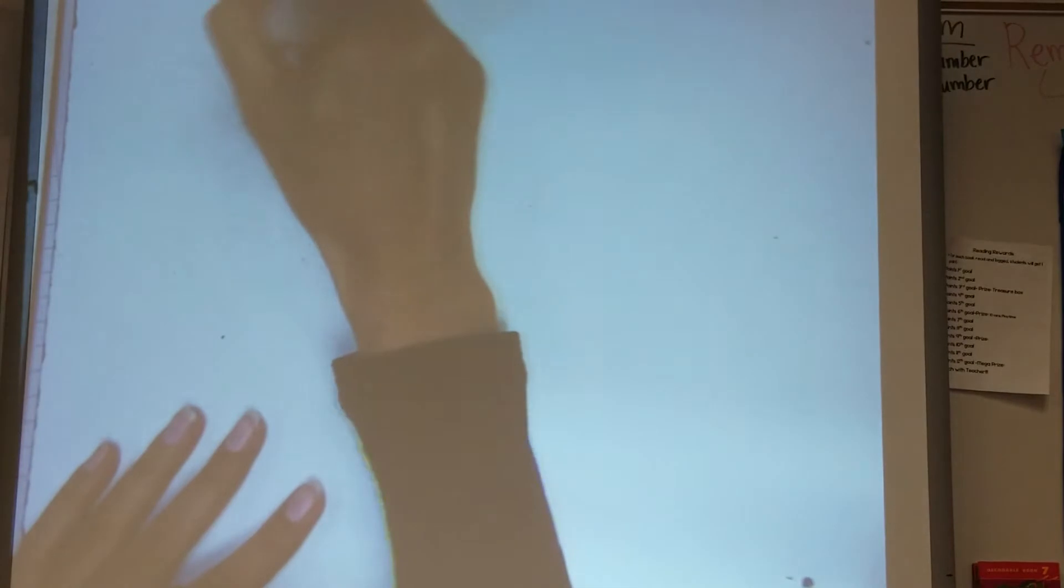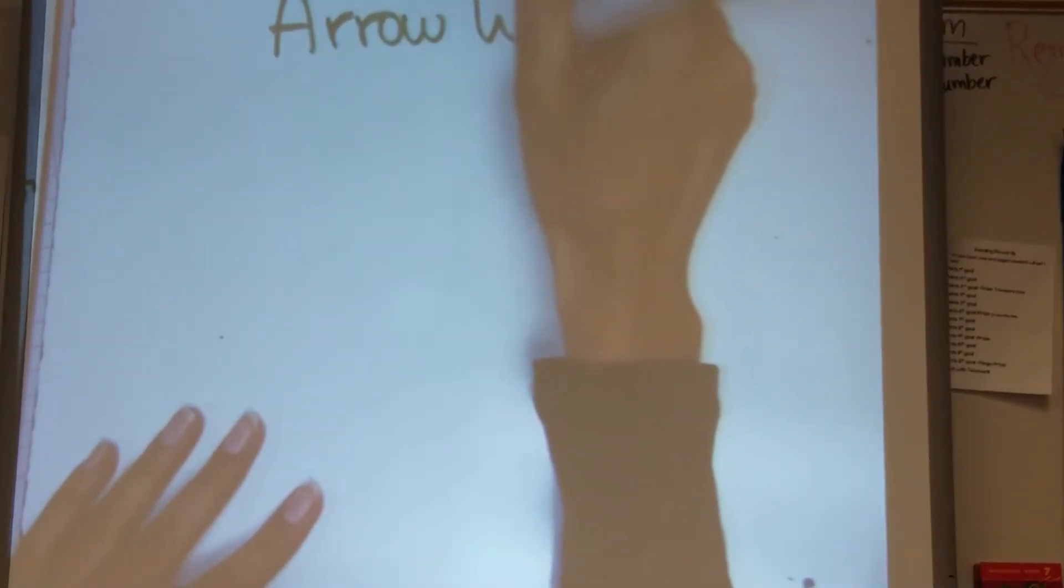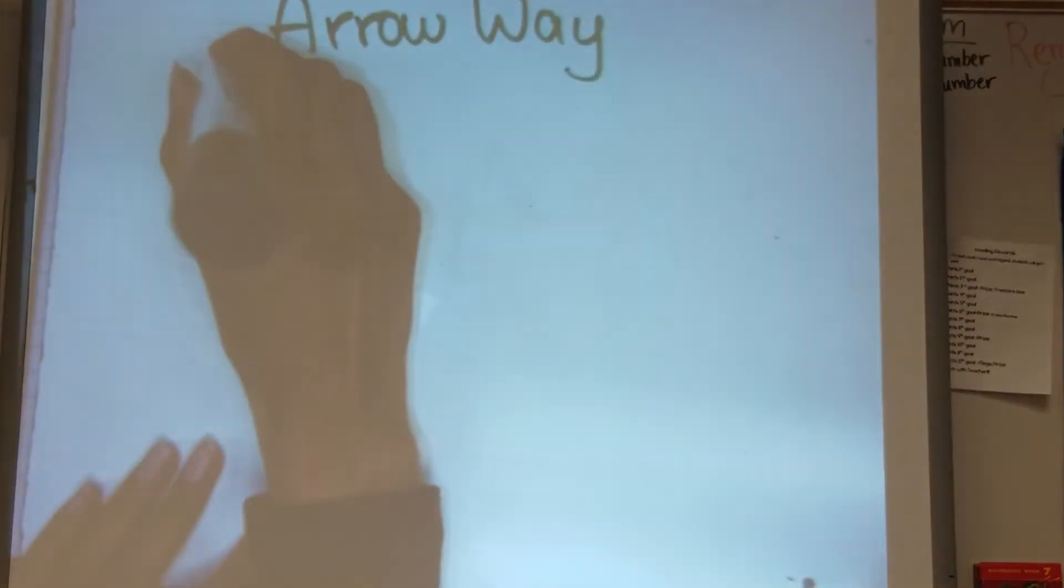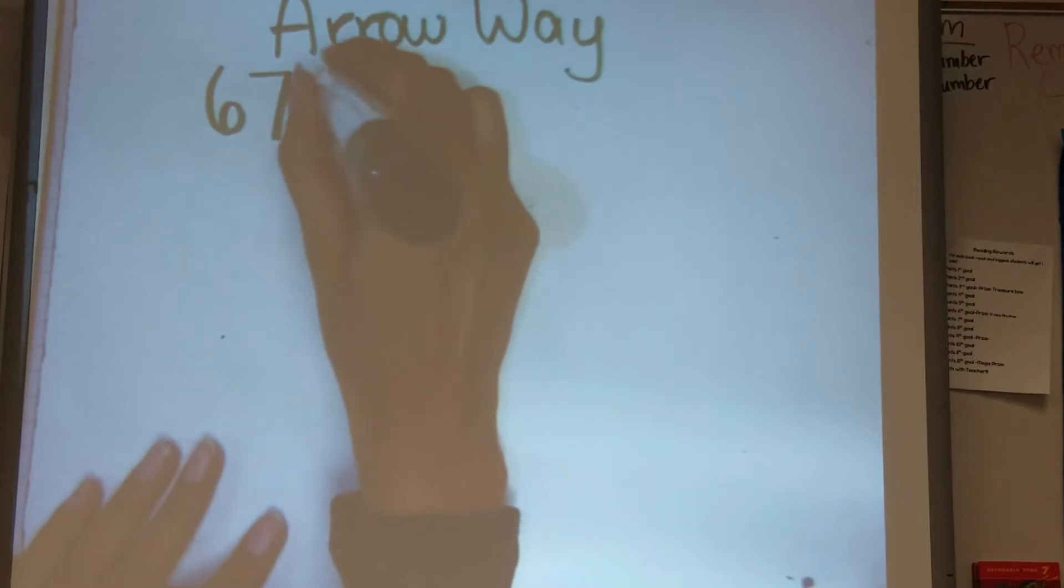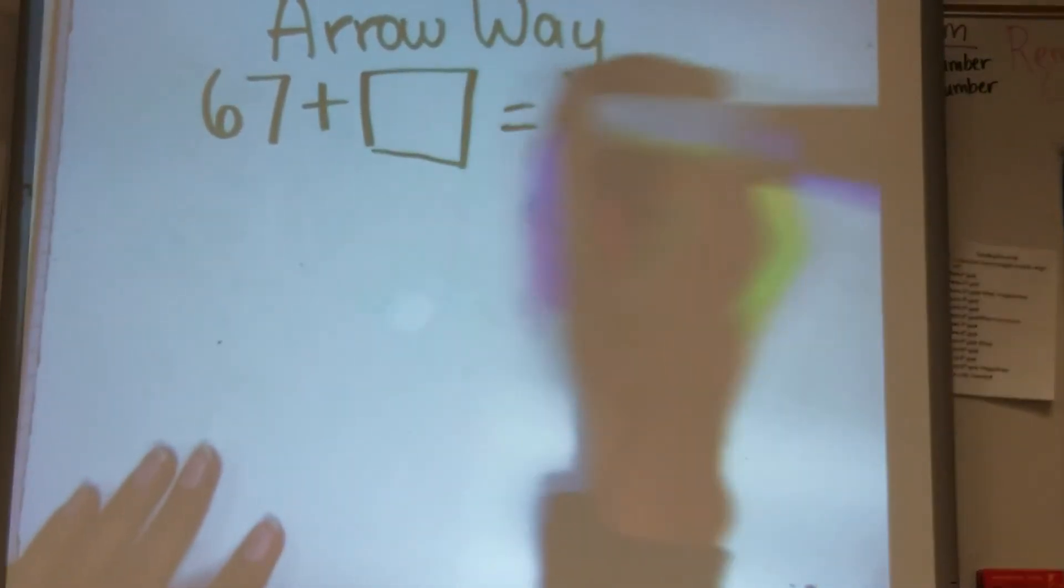So now we are doing the arrow way strategy again for addition, but now we are going to start with 67 plus blank equals 82.